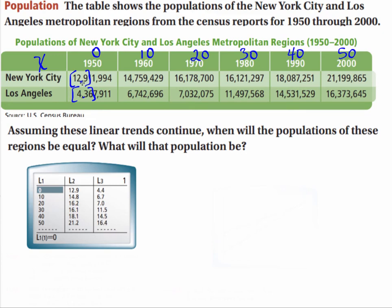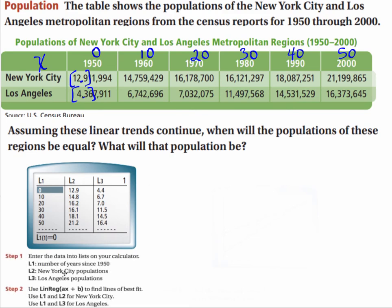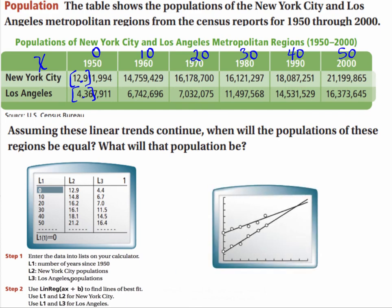You can take these to probably no more than two or three decimals, but you do want to be consistent. You're going to want to use a linear regression to find the best fit lines — using L1 and L2 for New York, and then L1 and L3 for Los Angeles. When you graph it, you're going to get something that looks like this. These aren't perfect lines, but the calculator will do the linear regression for you.